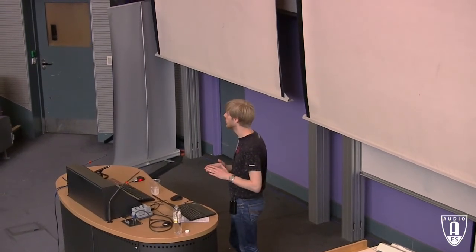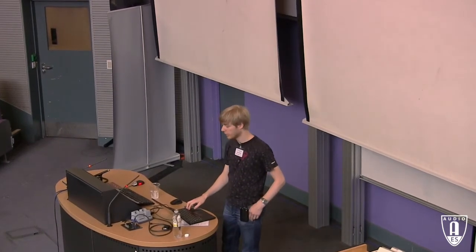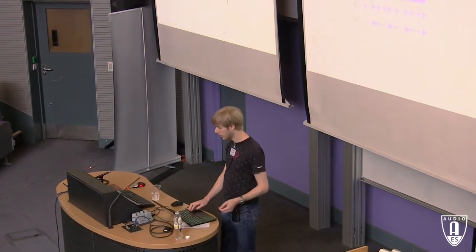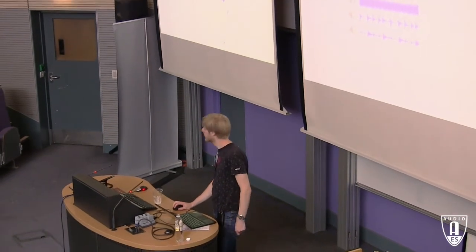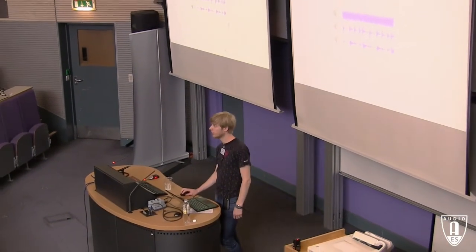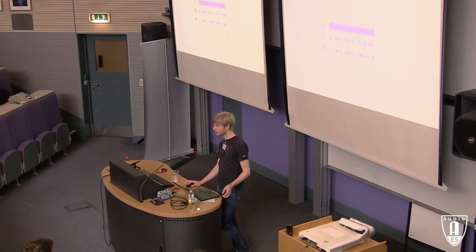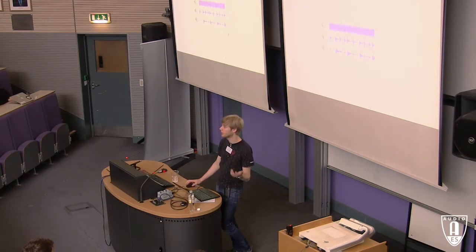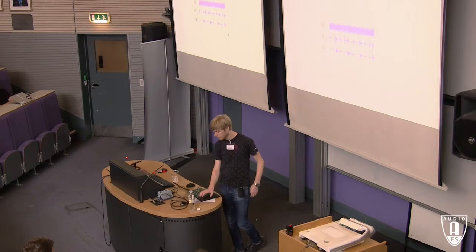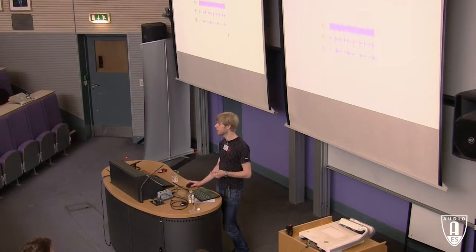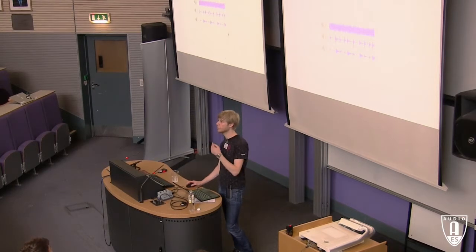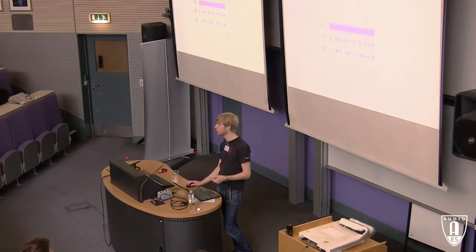I'll explain how it works in a bit, but first let's listen to some sounds to get an idea of how this works and what the software is capable of. Here's the input sound. And here's my target sound, a drum loop. So I want my white noise to sound like the drum loop. My software takes these two sounds and processes the white noise so that it sounds like the drum loop — like this. This is one output.